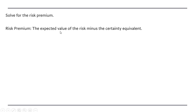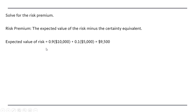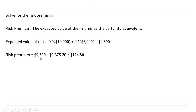Let's solve for the risk premium. The risk premium can be thought of as the expected value of the risk minus the certainty equivalent. There's a 90% chance there will be no storm, leaving your $10,000 of property undamaged, and a 10% chance of a storm leaving you with only $5,000. So the expected value of the risk is $9,500. The risk premium then is $9,500 minus the certainty equivalent, which equals $124.80.